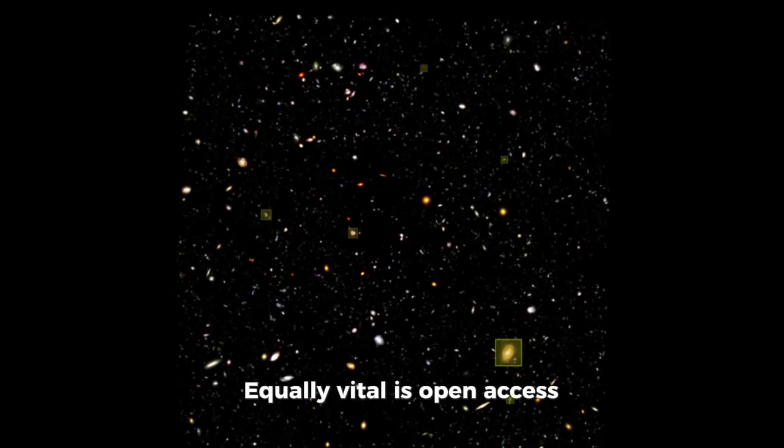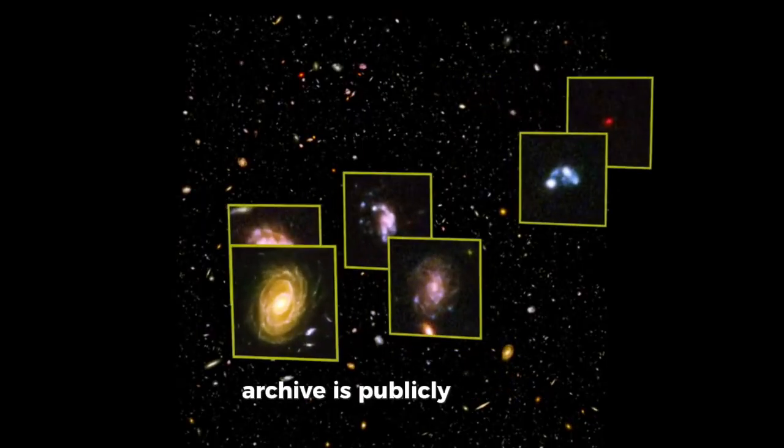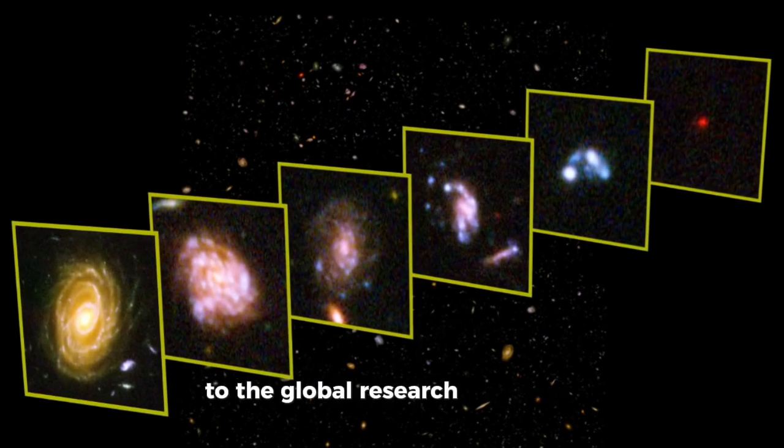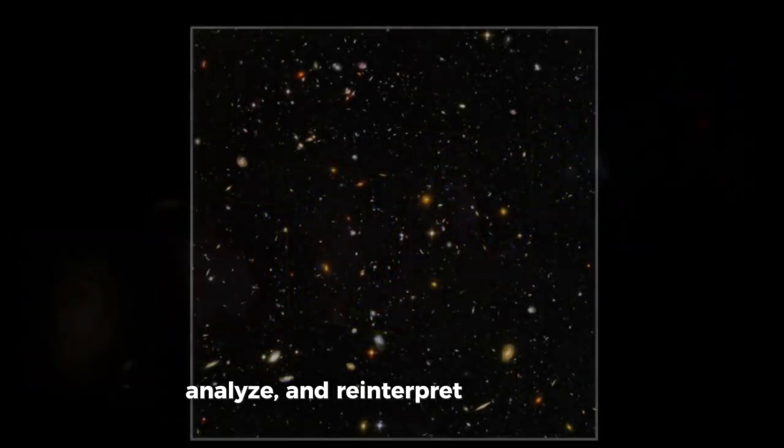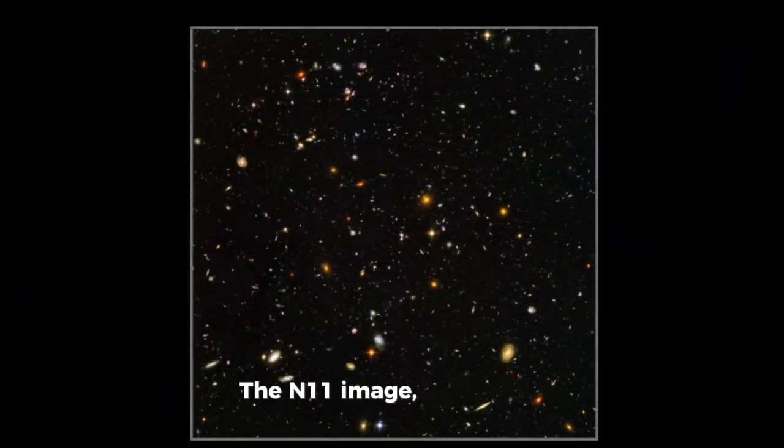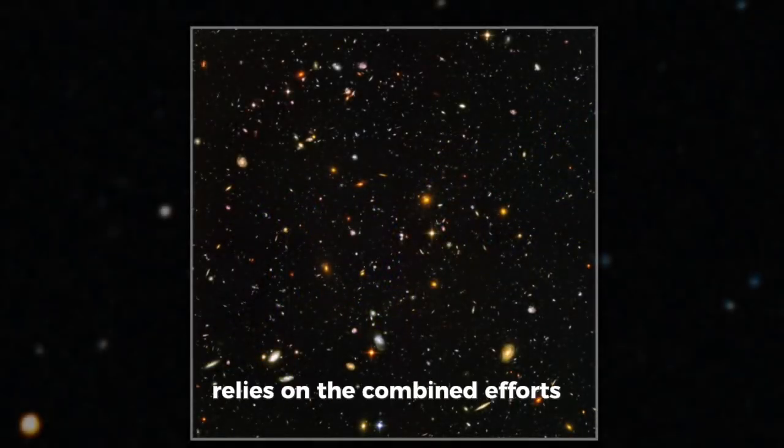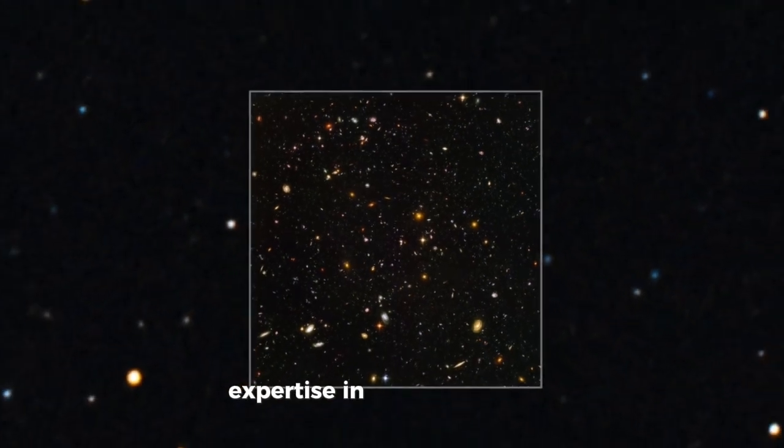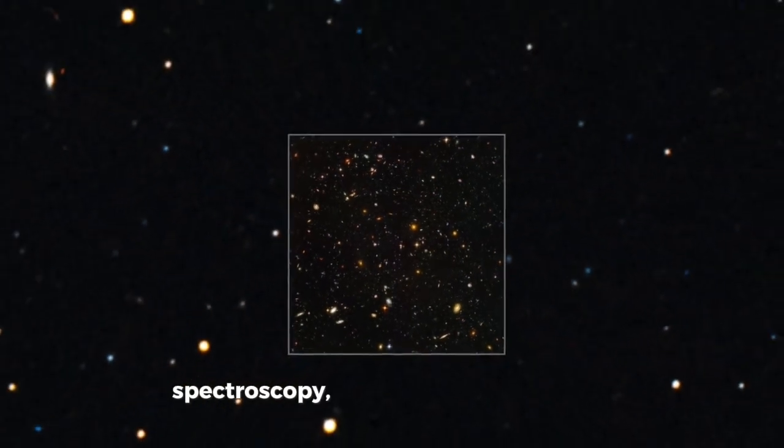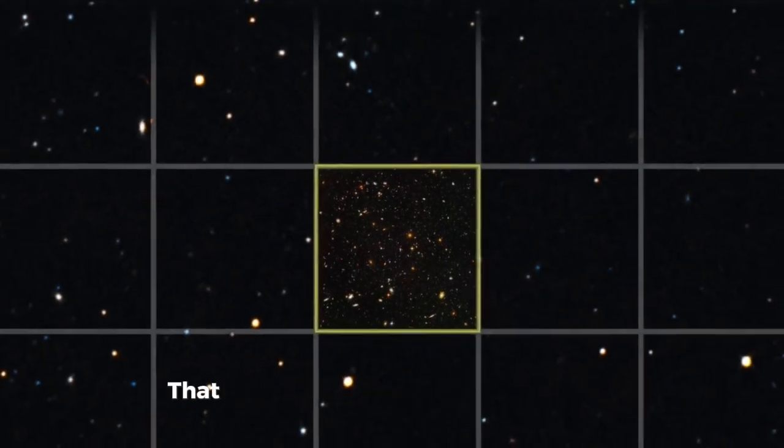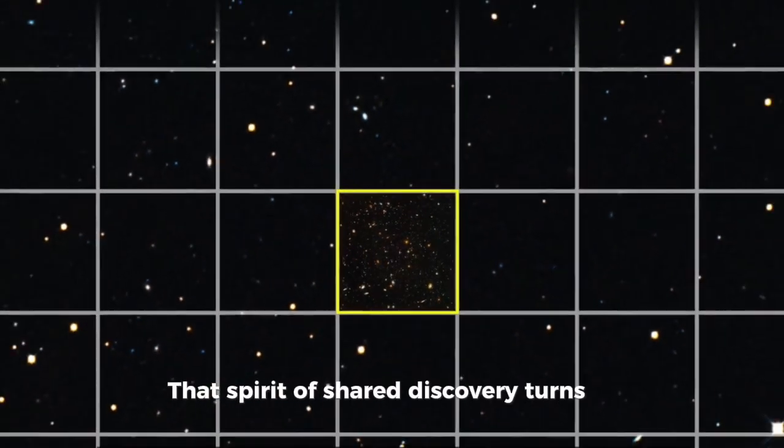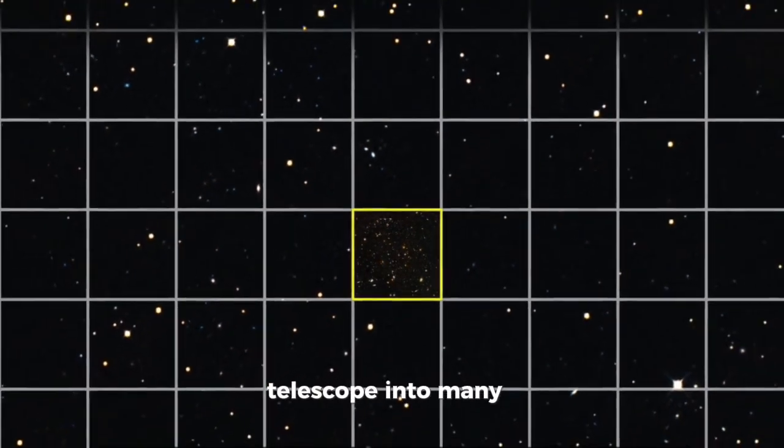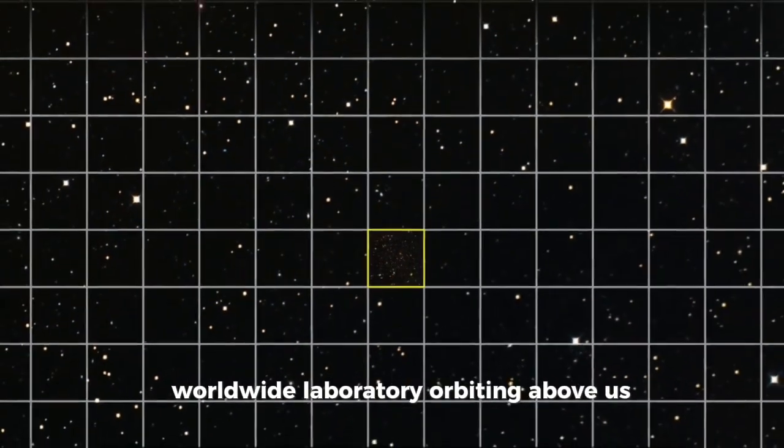Equally vital is open access. Hubble's data archive is publicly available to the global research community, allowing scientists from every continent to download, analyze, and reinterpret observations. The N11 image, for example, relies on the combined efforts of multiple research teams, each contributing expertise in image processing, spectroscopy, and theoretical modeling. That spirit of shared discovery turns one telescope into many, a worldwide laboratory orbiting above us.